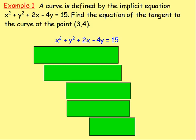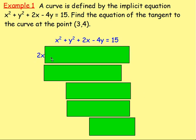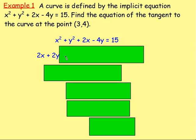This is implicit differentiation — we do not have to rearrange this to get Y equals, we can just differentiate from there. X squared would go to 2X if you differentiate it. Y squared, if you differentiate that, it would go to 2Y. But you'd need a DY by DX because we're differentiating Y with respect to X.